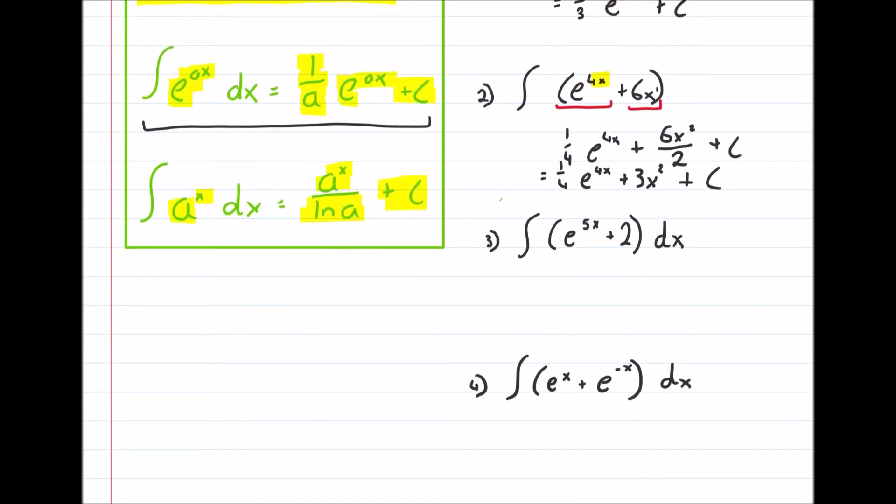Next one. Again, we'll take our first bit, the e to the 5x, and that will be 1/5 e^(5x), plus 2 integrated is just 2x, and then we have our plus c.